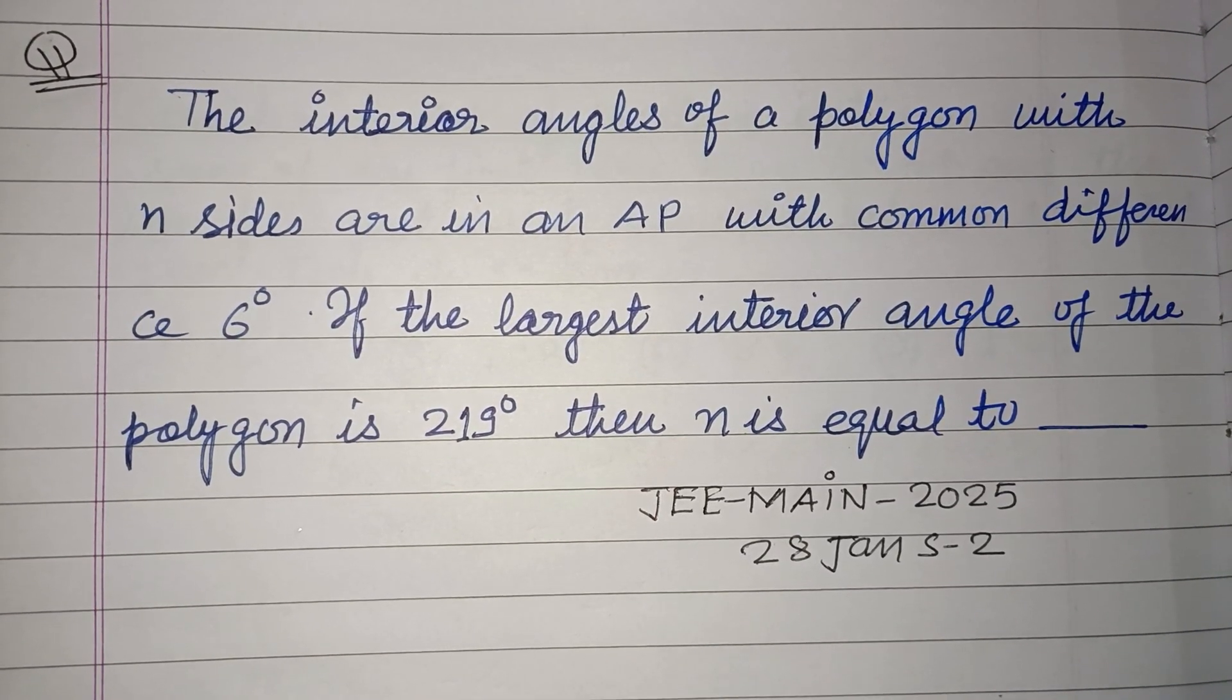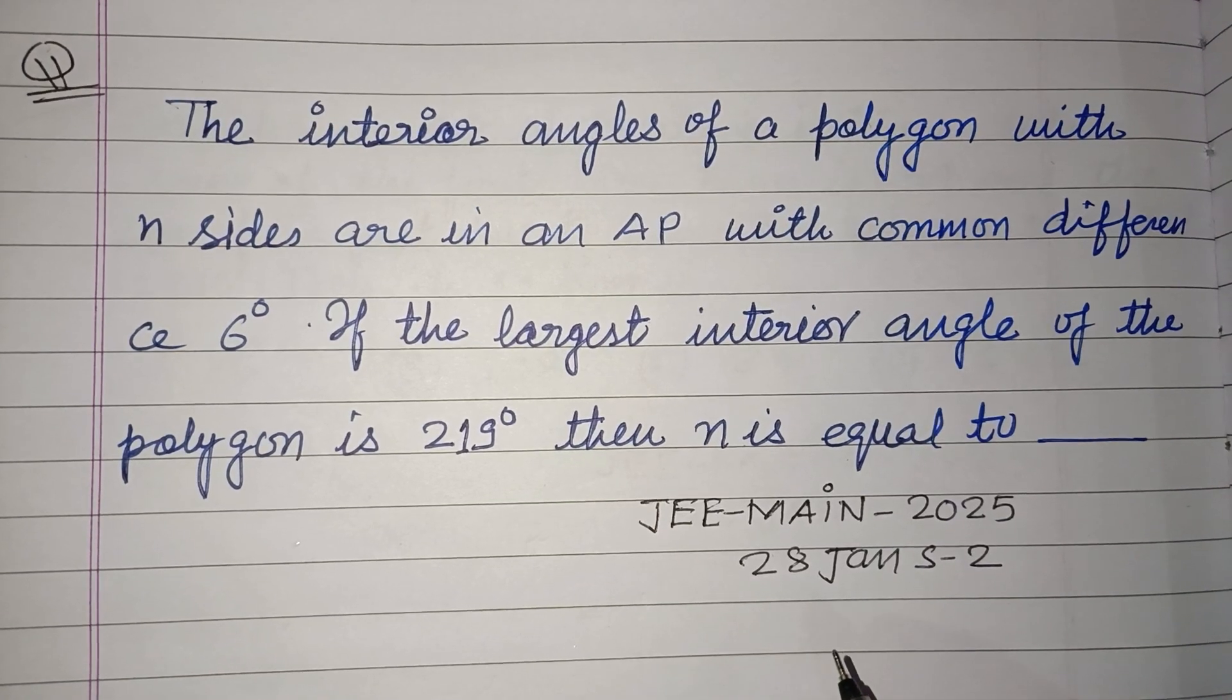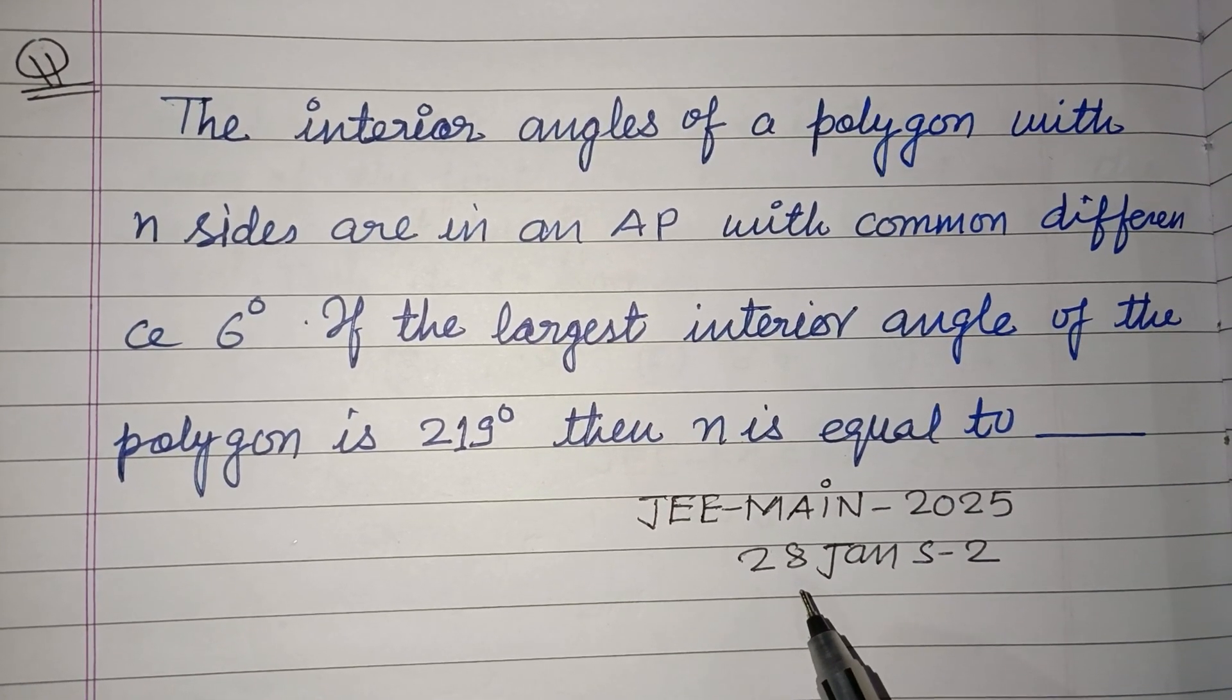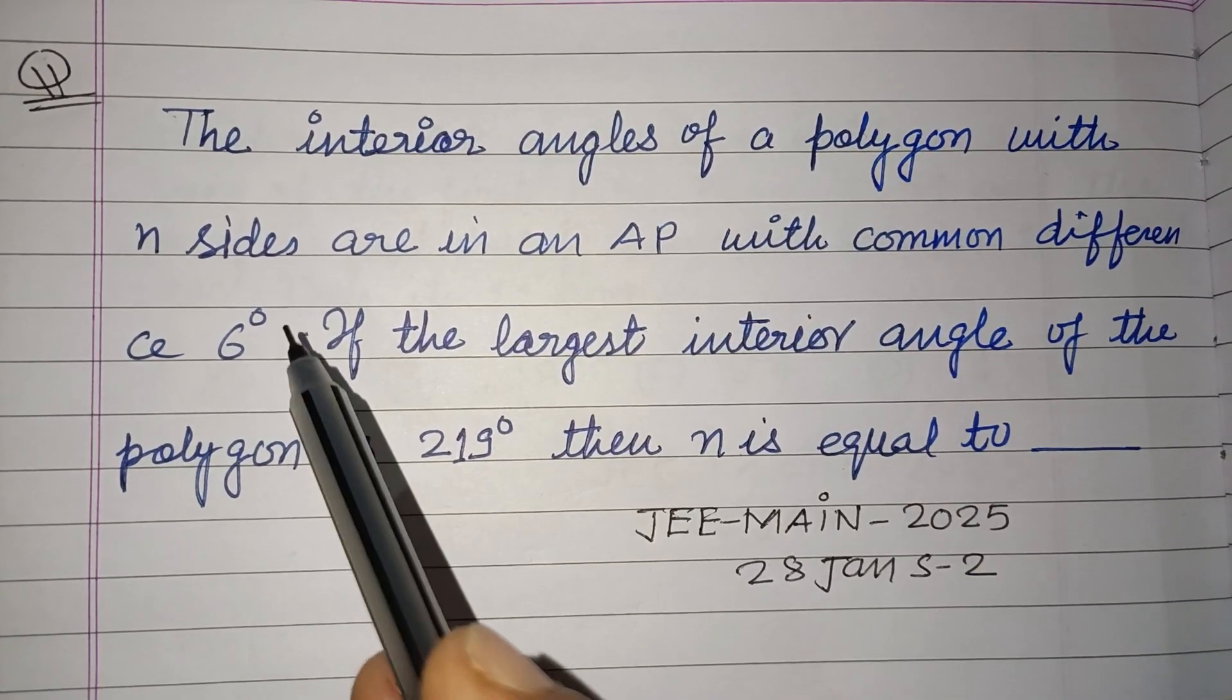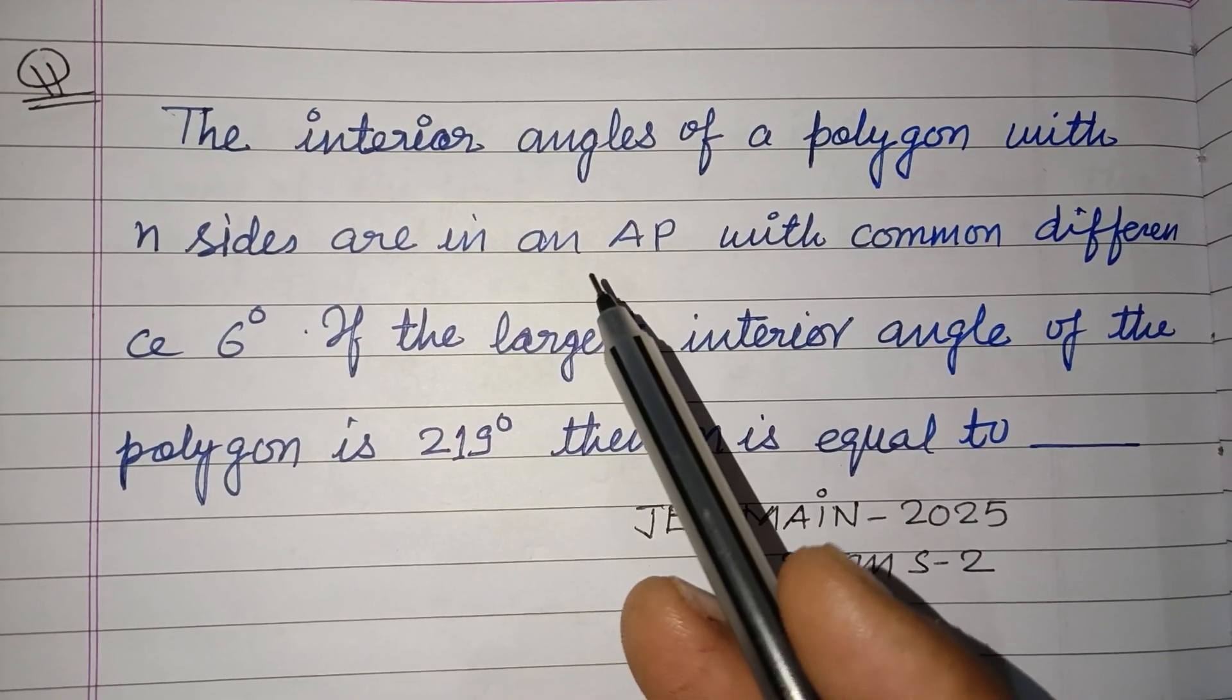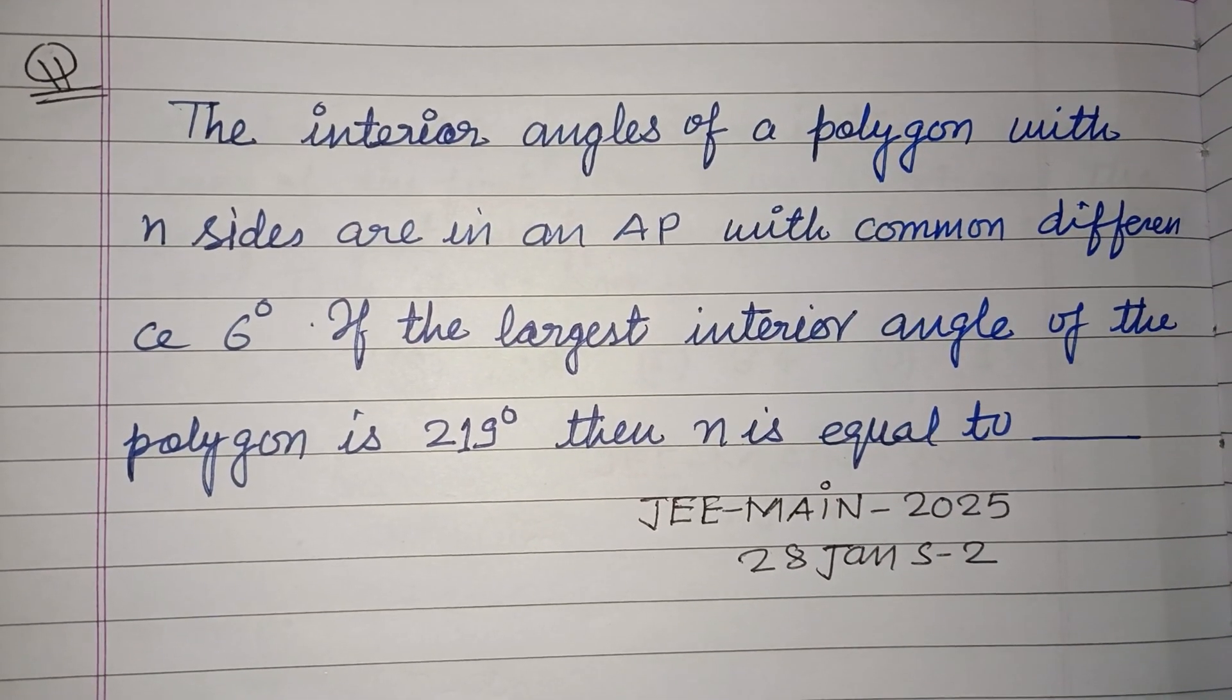Hello viewers, warm welcome to this YouTube channel. This is a question from JEE Main 2025, 28th January shift 2. The interior angles of a polygon with n sides are in AP with common difference 6 degrees. If the largest interior angle of the polygon is 219 degrees, then n is equal to...